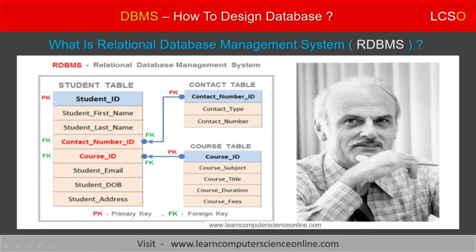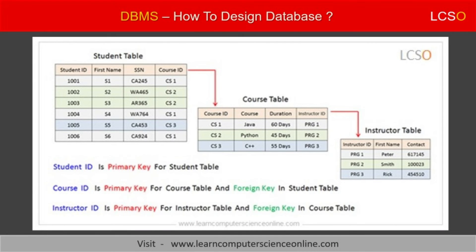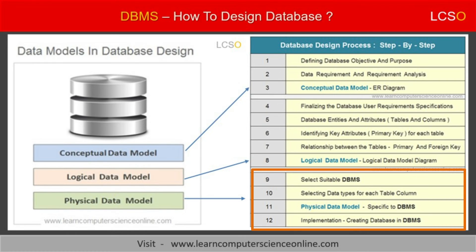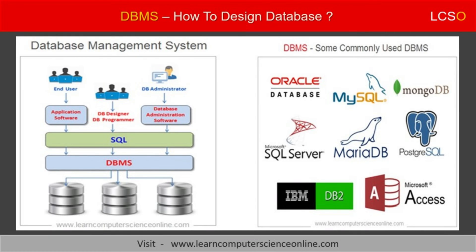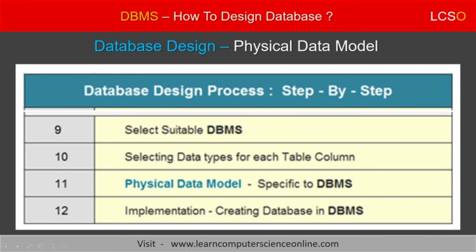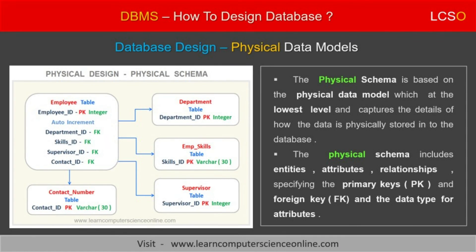For example, for relational databases, the logical data model includes details such as database entities represented by tables, entity attributes by table columns, and by defining the relationships between various database entities. The final stage of the database design and development project is building the database. After completing the planning stage, the final stage involves building the database using a specific database management system, DBMS. This stage is also referred to as the implementation stage. In this stage, the database designers build the database by implementing the physical data model. The physical data model is created by expanding the logical data model, and it includes some additional details which are specific to the DBMS selected for building the database.